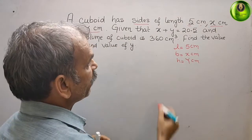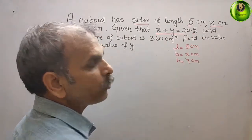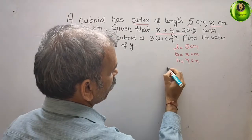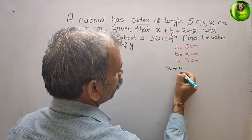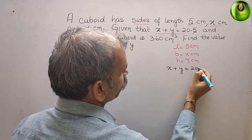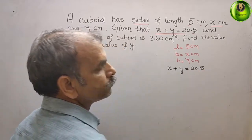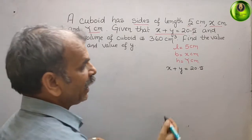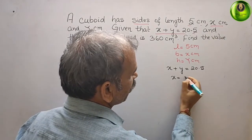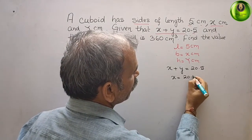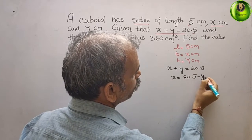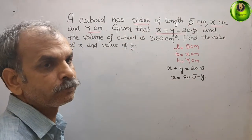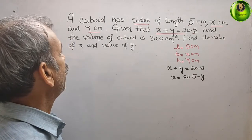Next, they have given that x plus y is equal to 20.5. From this, we can say that x is equal to 20.5 minus y.